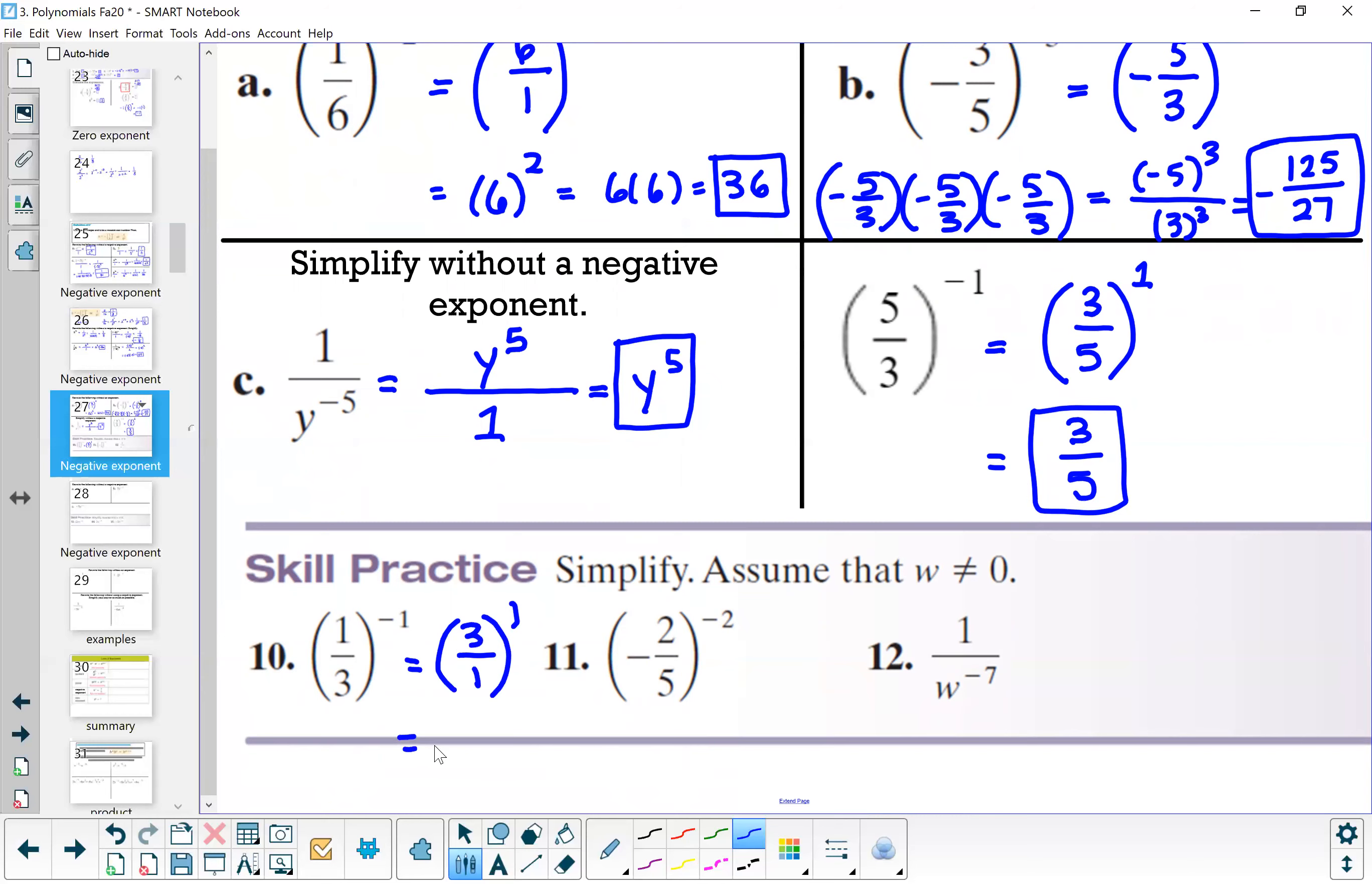All right, number 11: I have in parentheses (-2/5), closed parentheses to the power of negative 2. So I am going to take the reciprocal of my base, which now becomes -5/2, and that's being raised to the power of positive 2. So then that's equal to squaring negative 5 divided by squaring 2. So I have 25 divided by 4, and that is simplified.